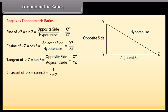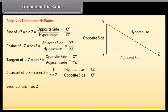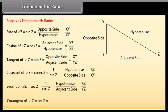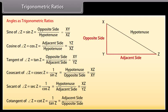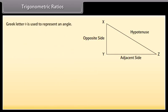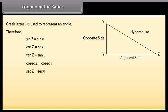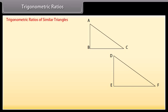Cosecant of angle Z equals 1 upon Sin Z, which equals hypotenuse upon opposite side. Secant of angle Z equals 1 upon Cos Z, which equals hypotenuse upon adjacent side. Cotangent of angle Z equals 1 upon Tan Z, which equals adjacent side upon opposite side. The Greek letter theta is used to represent an angle. Therefore, Sin Z may be written as Sin θ, Cos Z as Cos θ, and Tan Z as Tan θ.